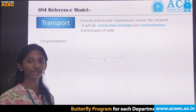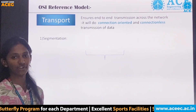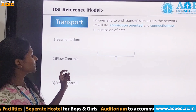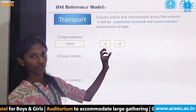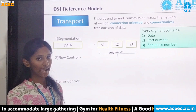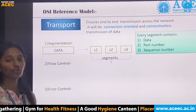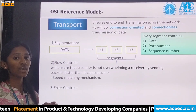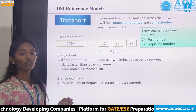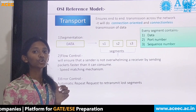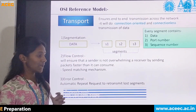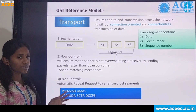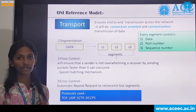The transport layer ensures end-to-end transmission across the network. It handles connection-oriented and connectionless transmission. Its major functions are segmentation, flow control, and error control. In segmentation, data is divided into smaller units called segments, each containing data, a port number, and a sequence number. Flow control ensures the sender does not overwhelm the receiver by matching speeds. Error control uses automatic repeat requests to retransmit lost segments. Protocols include TCP, UDP, SCTP, and DCCPS. TCP is used for connection-oriented and UDP for connectionless transmission.